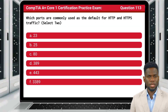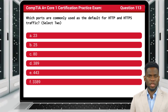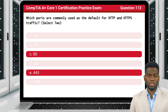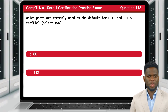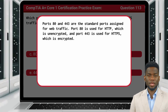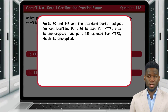Question 113. Which ports are commonly used as the default for HTTP and HTTPS traffic? Select 2. The answer is C and E: 80 and 443. Ports 80 and 443 are the standard ports assigned for web traffic. Port 80 is used for HTTP, which is unencrypted.